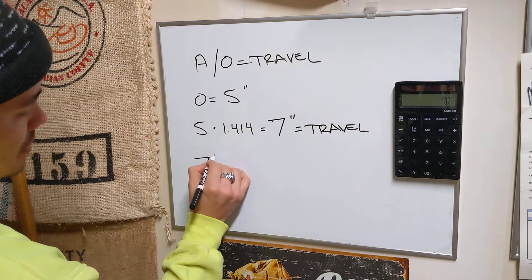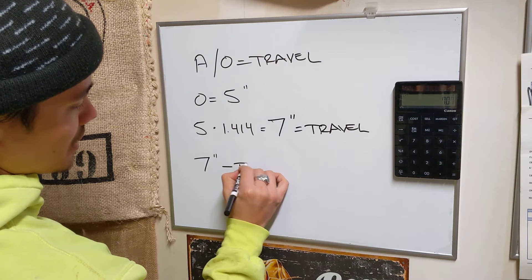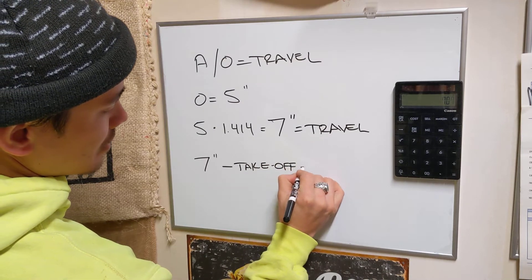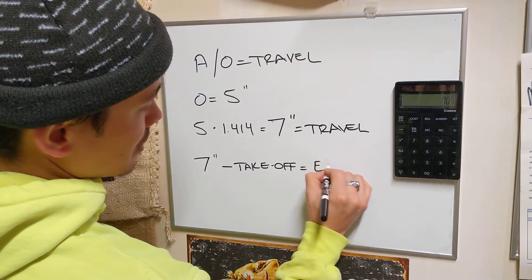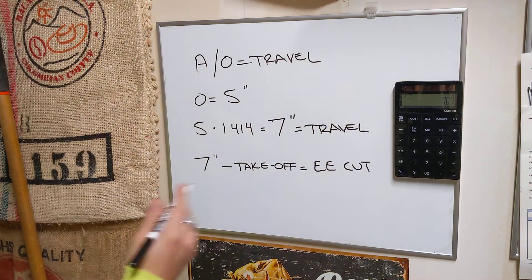You take 7 inches minus your takeoff of your fitting. That equals end to end cut. Okay? That's how you do your offset.